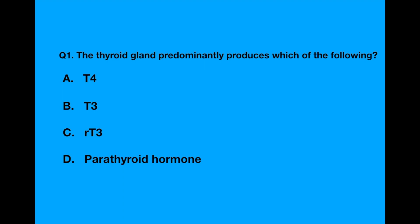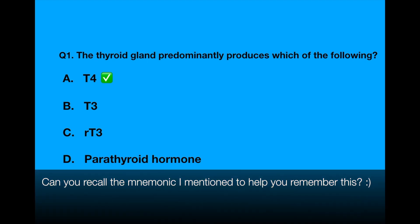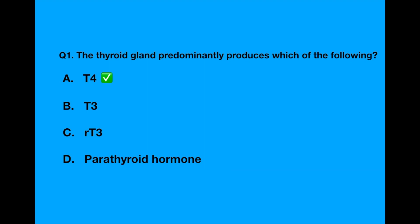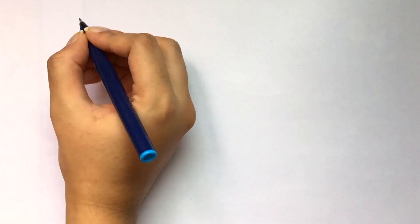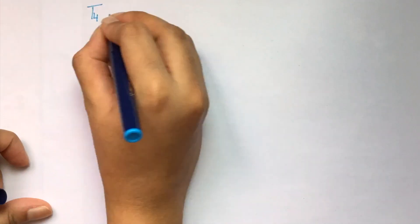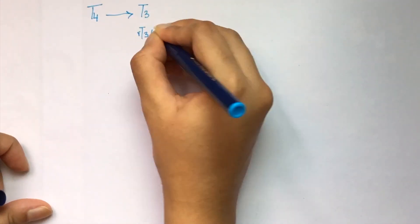The answer to this question is T4. The major product of the thyroid gland is T4. T3, however, is the more active form. With the help of the enzyme deiodinase, T4 gets converted to T3.